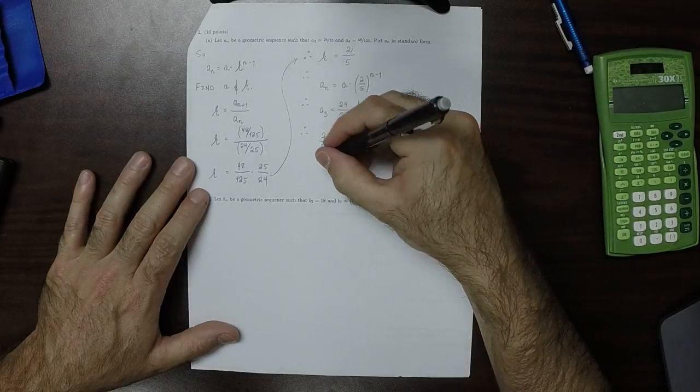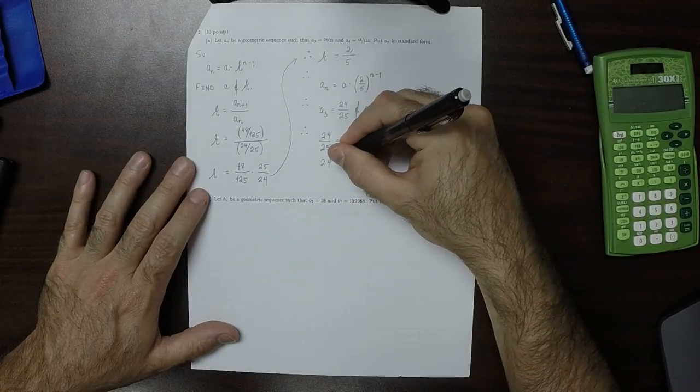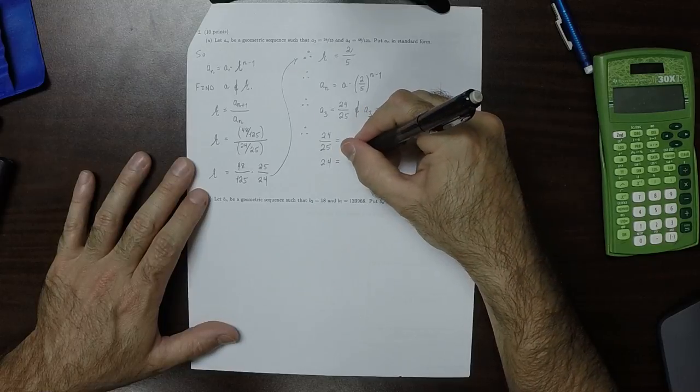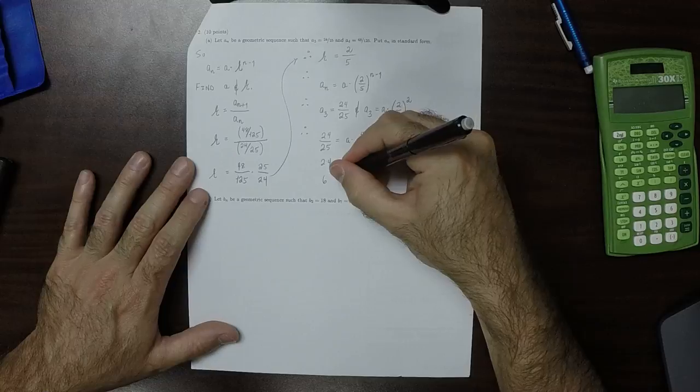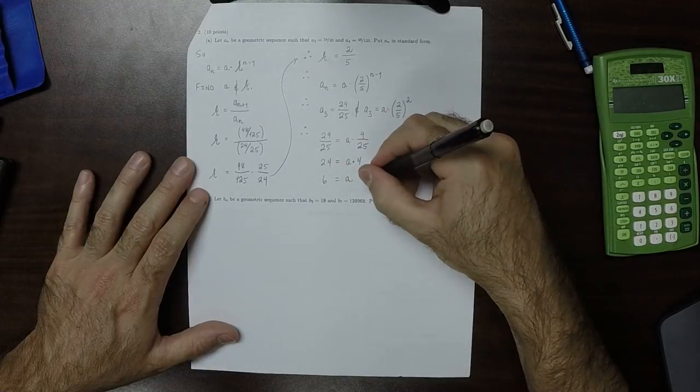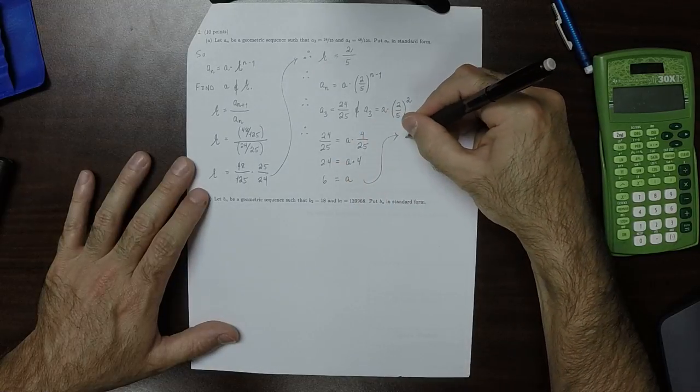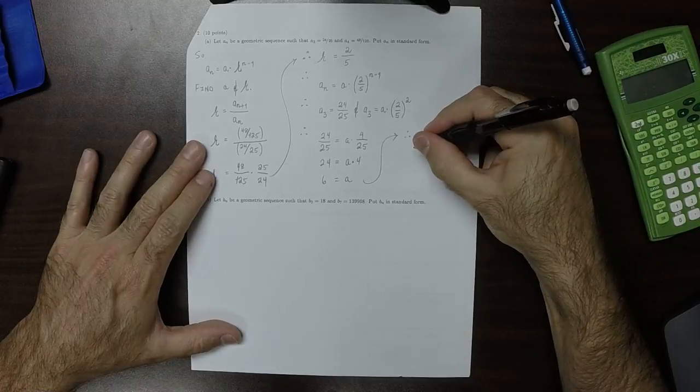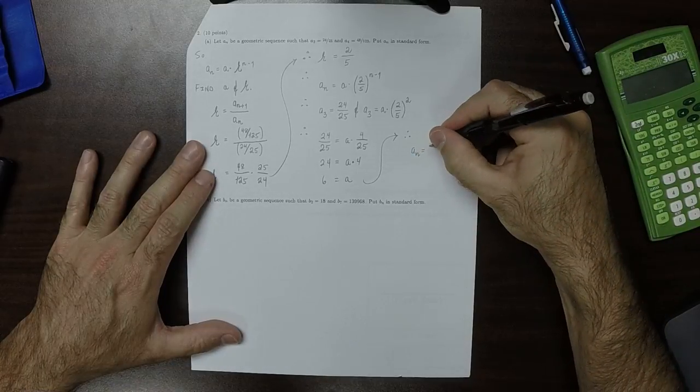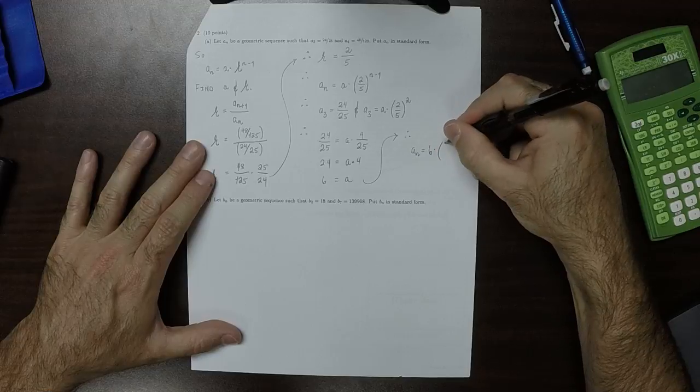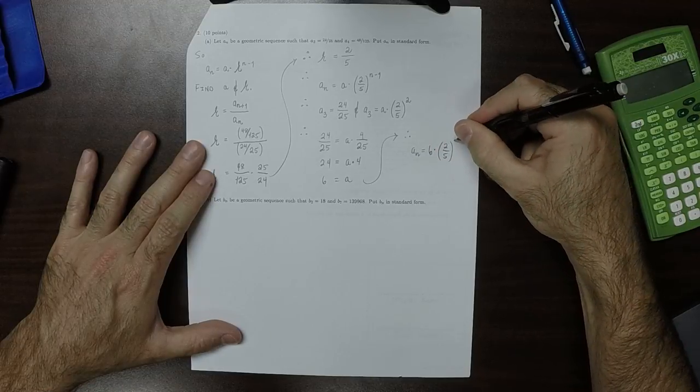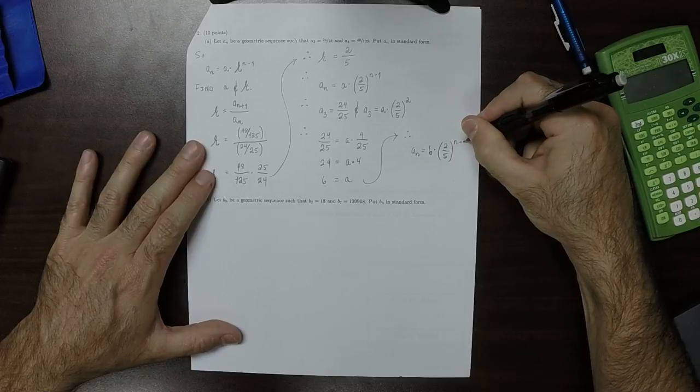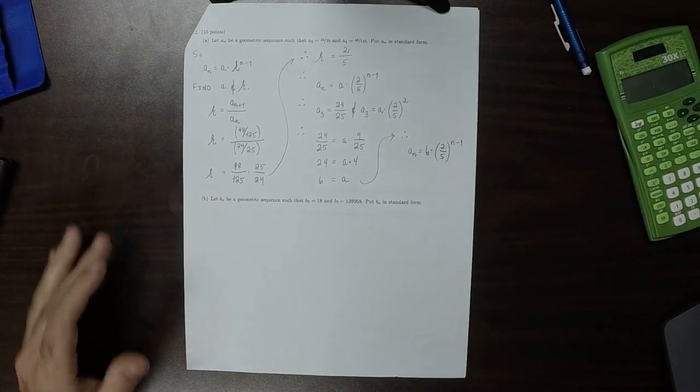What we know is that those two numbers must be equal to each other. So 24 over 25 is a multiplied by 4 over 25. We can multiply both sides by 25, so 24 is a multiplied by 4. Divide by 4, so 6 is a. Therefore, we know now that aₙ is 6 multiplied by 2/5 to the power n minus 1. That's the answer to part a.